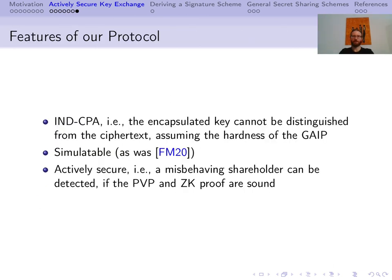Our key exchange mechanism has the following qualities. It is IND-CPA: given a public key, a ciphertext, and two potential keys, an adversary cannot distinguish which one is linked to the ciphertext. Also, our decapsulation protocol is simulatable — we proved this by reducing to the group action inverse problem, distinguishing the output of a concrete simulator from a real transcript in a series of game hops. And third, the decapsulation protocol is actively secure: if a shareholder can provide incorrect input without being detected, then he can either break the zero-knowledge proof or the piecewise verifiable proof.